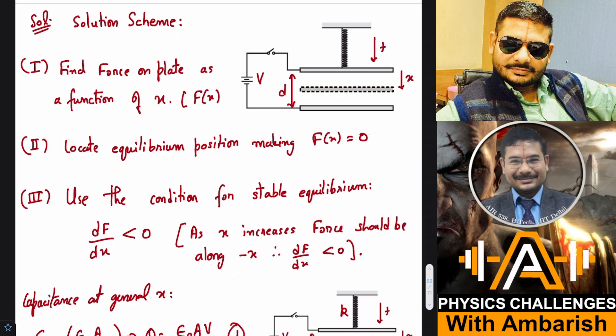It's important that for stable equilibrium, if you move the plate a little down, the increase in downward force should be less than the increase in upward force. Or we can say that the derivative of force with respect to x should be negative. As x increases from equilibrium position, force should become negative—the force is restoring and that means the equilibrium is stable. So use the condition for stable equilibrium: dF/dx less than zero. As x increases, force should be along minus x. That's the scheme of the solution.